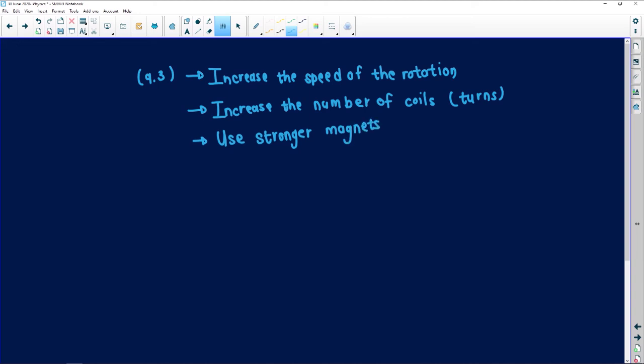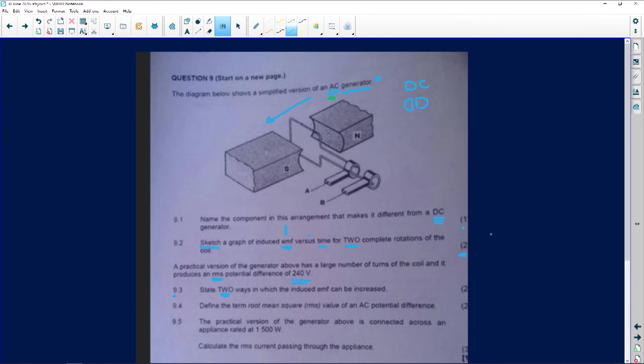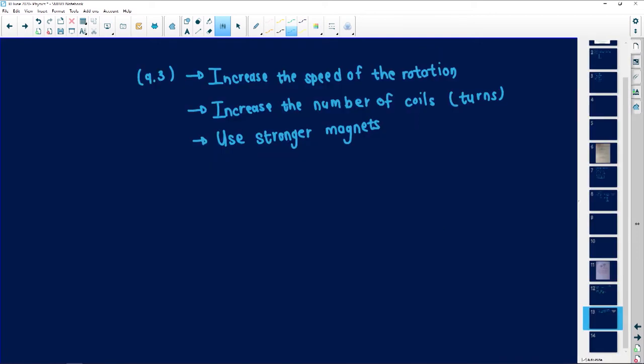And then the last one is use stronger magnets. If we use stronger magnets, it will induce something stronger. In this case, they said name state two. If they write this in capital letters, the examiner is very serious about you naming two. Please don't go name three. I just gave you three just in case the other examiner wants you to name three. But if you're going to name three instead of two, they might give you negative marking because you are not following instructions. So make sure you follow instructions and only give two, but learn these three.